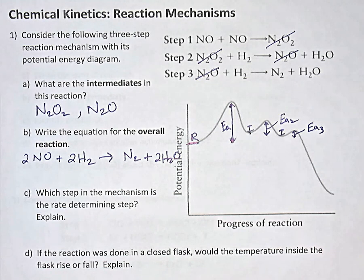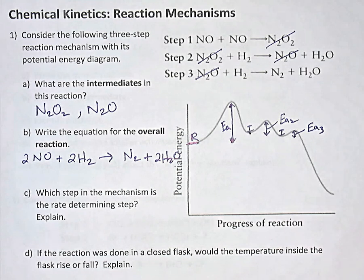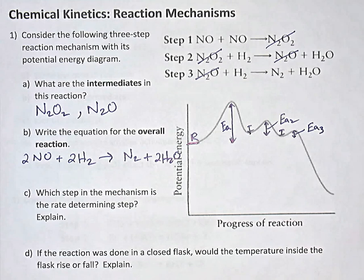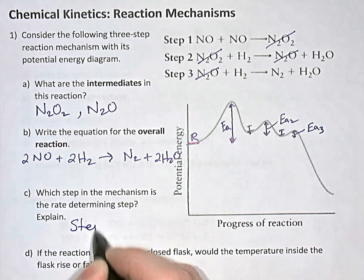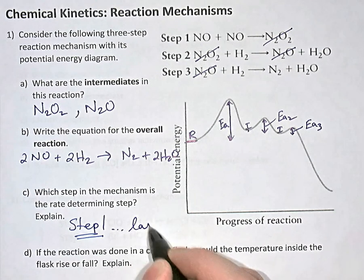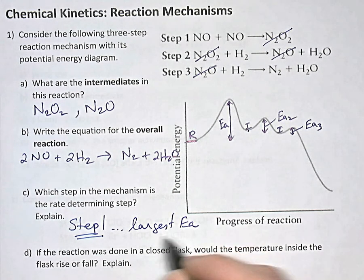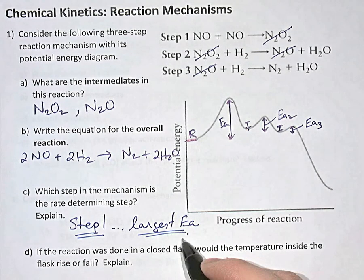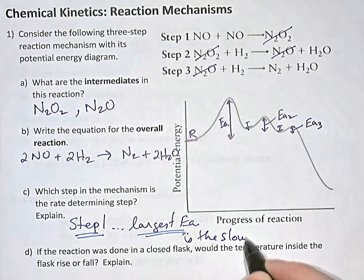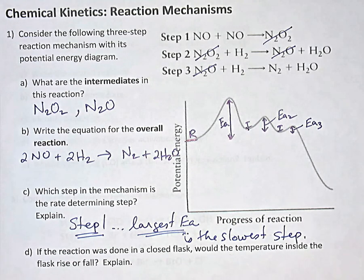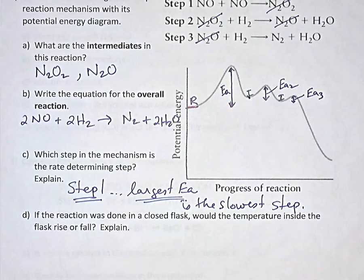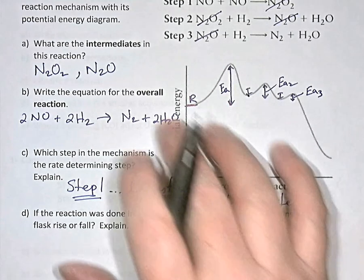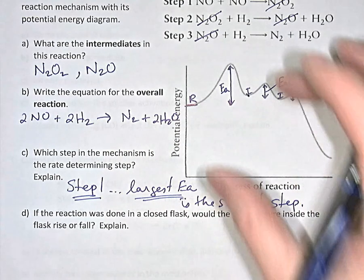The rate-determining step is the slowest step of the mechanism. The larger the activation energy, the fewer particles have that much energy, and if fewer particles have enough energy, that step will be the slowest. So the largest activation energy means the slowest step — in this case, step one. The step with the largest activation energy is the rate-determining step, because the slowest step determines the rate of the overall process; the entire reaction can only go as fast as its slowest step.